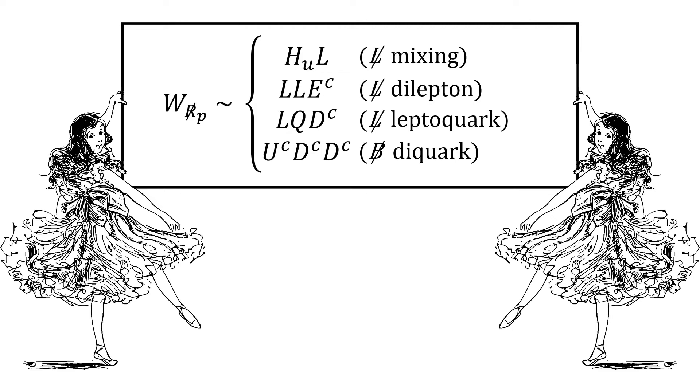The simultaneous presence of the leptoquark and diquark couplings would lead to rapid proton decay. One of the two must therefore be absent or incredibly small, but the other would be allowed.